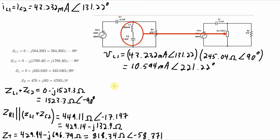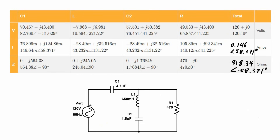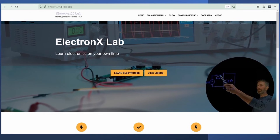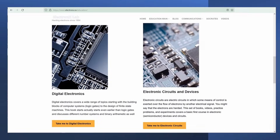And the voltage across the capacitor uses the same calculation: current times the impedance of the capacitor. That was the last calculation. Here's the table with all the values — the voltages, the currents, and the impedances for all of the components: C1, the inductor, C2, and the resistor, as well as the totals. This table and example problem came from a free open source textbook, and you can find the link to the problem in the description.